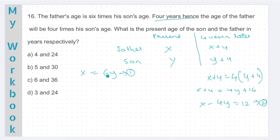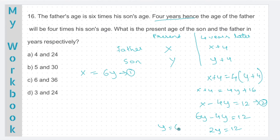We need to solve equation 1 and 2 to get the values of x and y. Let me use substitution method here. First equation states x is equal to 6y. Let's substitute x as 6y in equation number 2. You will get 6y minus 4y is equal to 12. So 2y is 12, which implies y is equal to 6. If y is 6, x is 6 times 6, which will be 36. Son's age is 6. Father's age is 36. Option C is the correct answer.